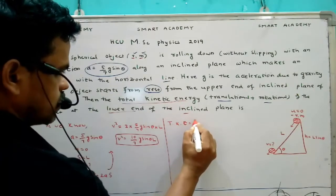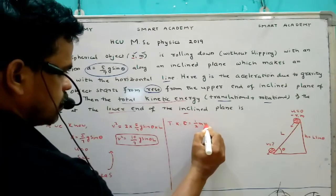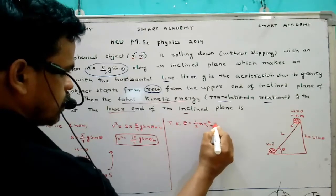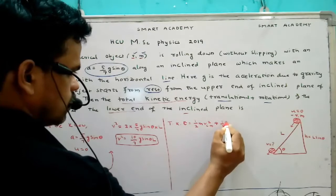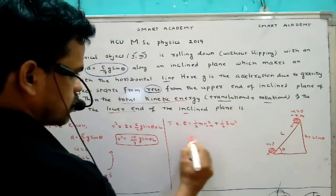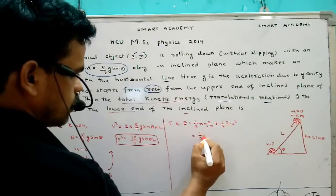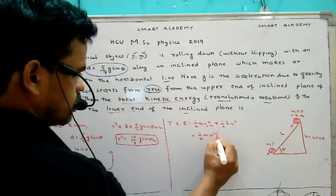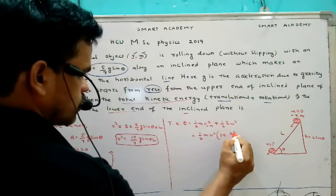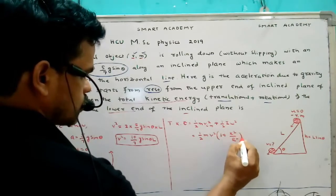Total kinetic energy of the object is translational kinetic energy plus rotational kinetic energy. If you solve, you will get this equation 1 plus K square by R square here.